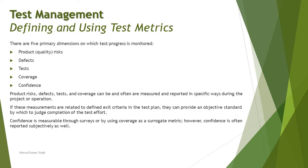In order to continue and understand more about defining and using the test metrics, in the previous tutorial we got a basic introduction to what these metrics can be helpful for, what test managers should consider in order to select the right set of metrics, and what different metrics are available. As part of this tutorial we are doing a deeper dive to understand what parameters can be measured with the help of metrics, and what typical metrics are available to measure things that happen in the testing life cycle.